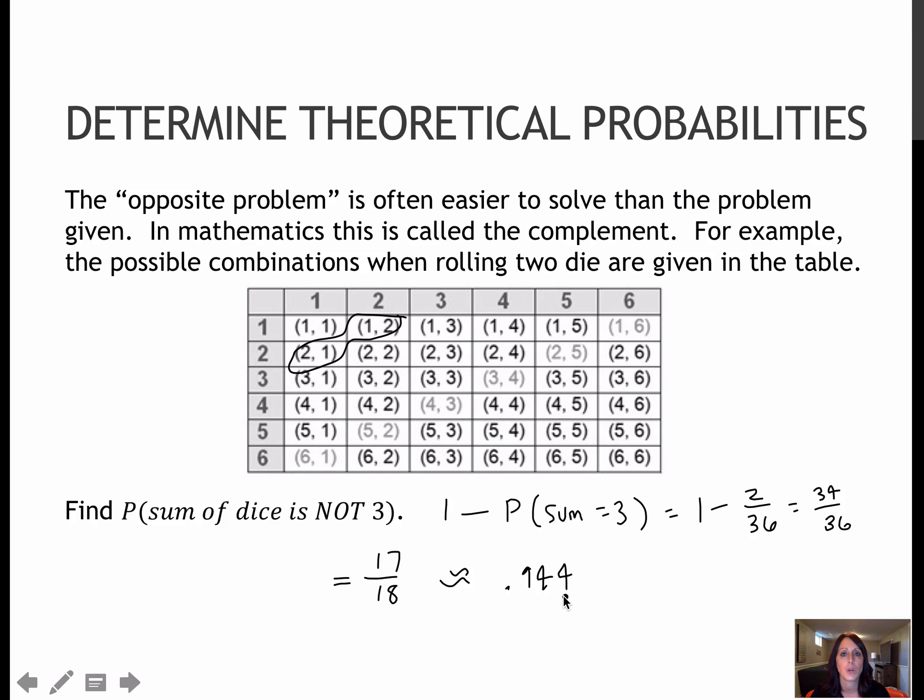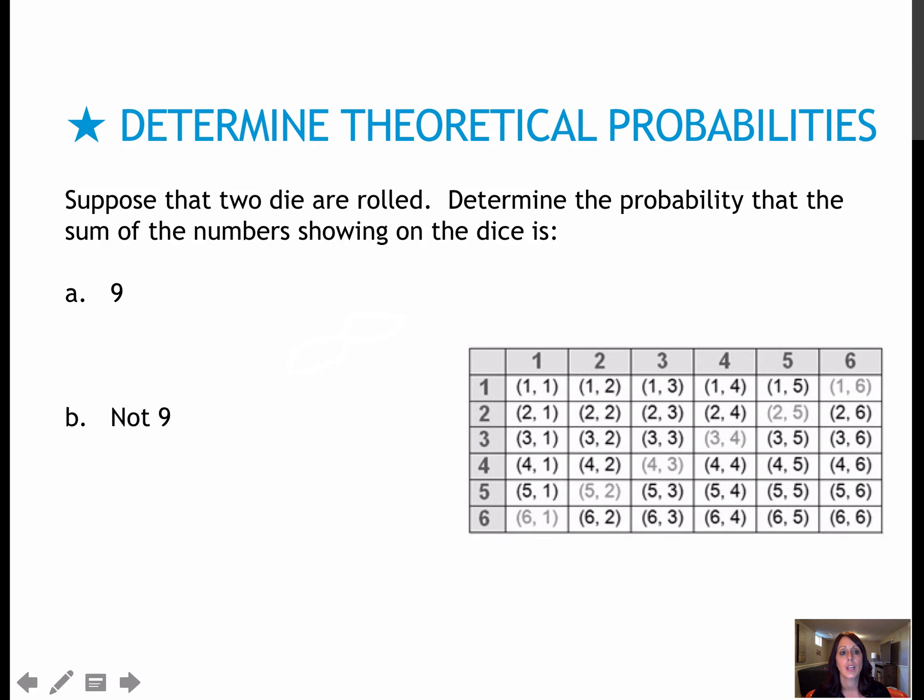So again, I could have gone through and added all of the rest of these, but it's easier just to take 1 minus the probability that it is. Here are two questions for you to try. So press pause, try both questions, then press play to check your work.